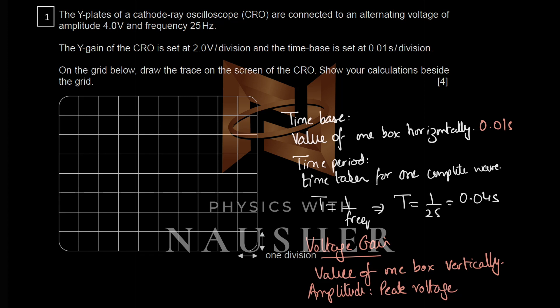The time period is the time taken for one complete wave. The frequency is given as 25 Hz, so one over frequency gives the time for one wave: 0.04 seconds. If one box is 0.01 seconds, then four boxes equal 0.04 seconds, so your wave finishes in four boxes horizontally.